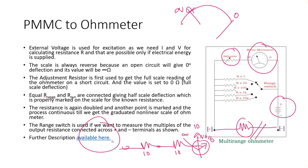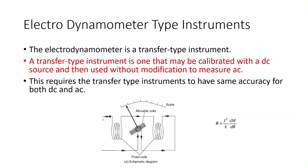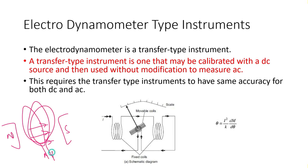Moving to the electrodynamometer type instrument: all previous mechanisms used a static magnetic field for DC values. With AC, the direction of current changes with time. In the PMMC, the static magnet stays fixed but the coil reverses, so the needle cannot deflect consistently. To solve this, the permanent magnets are replaced with coils.